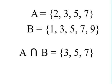The whole sentence is read: set A intersected with set B is equal to the set 3, 5, and 7. You could also read it as the intersection of sets A and B is 3, 5, and 7. That symbol between the A and the B — an upside-down U — is the symbol for intersection.